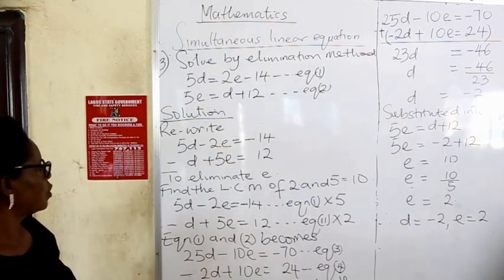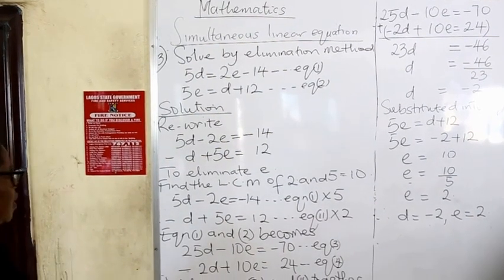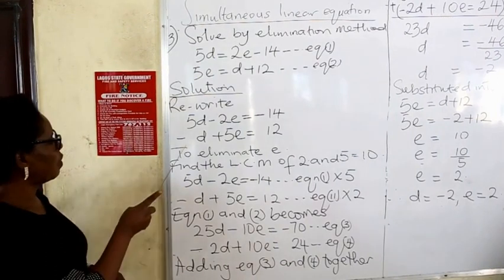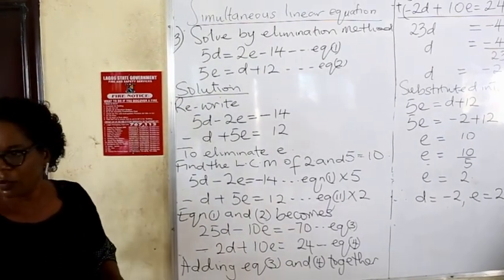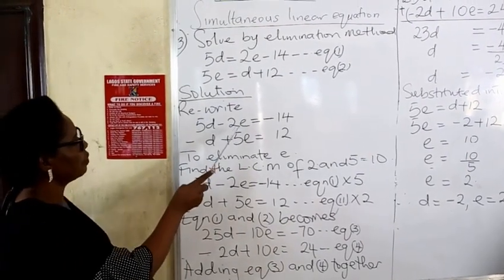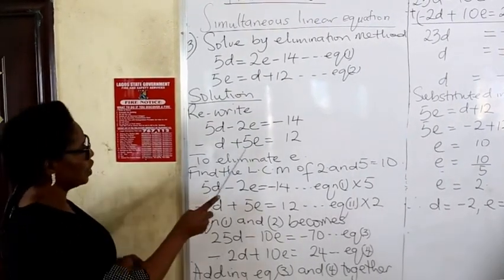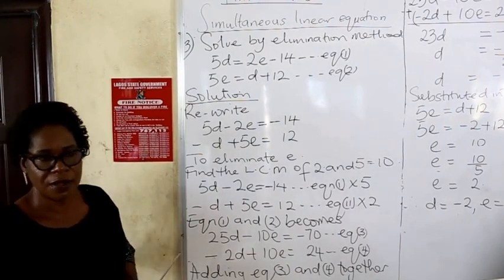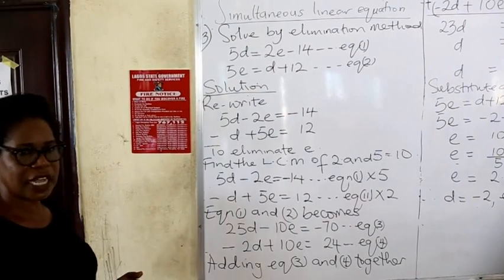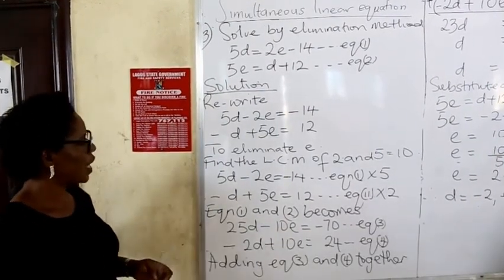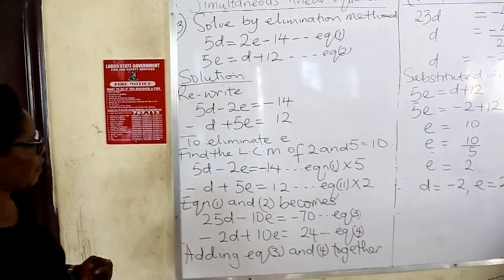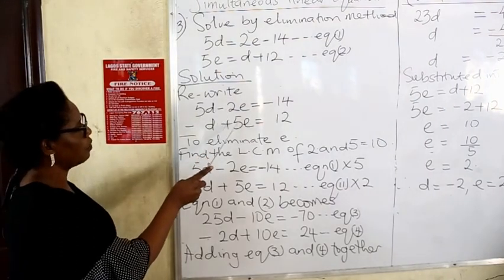Now we solve simultaneously. Which variable do we eliminate — d or e? The numerical coefficient of d in equation 1 is 5, and in equation 2 is 1 — they are not the same, so we cannot eliminate d. The numerical coefficient of e in equation 1 is 2, and in equation 2 is 5 — they are also not the same, so we cannot directly eliminate e. But we can still use the elimination method — we just need to decide which variable to eliminate and find the LCM.